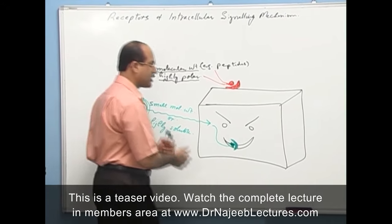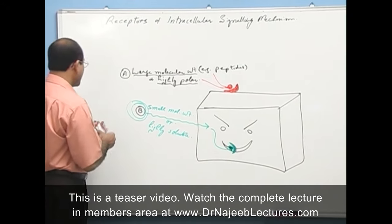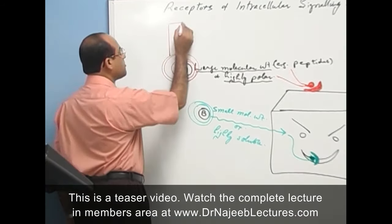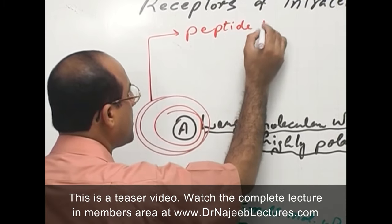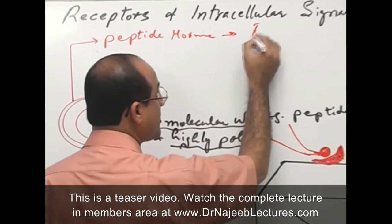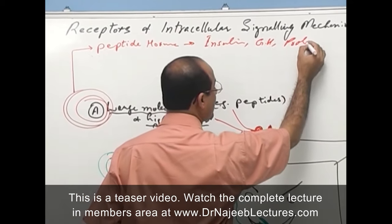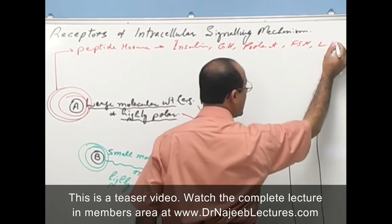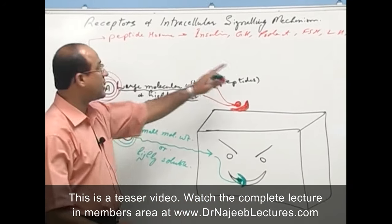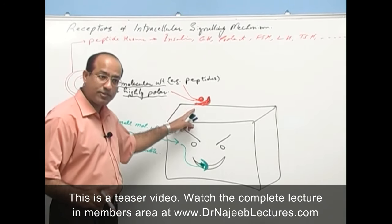For substances whose receptors are on the surface: peptide hormones such as insulin, growth hormone, prolactin, FSH, LH, and TSH — all these are large peptides that cannot enter the cell, so their receptors are on the surface of the cell.